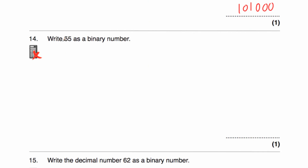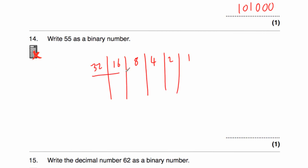Let's have a look at question 14. Question 14 says, write 55 as a binary number. Let's write our columns: 1, 2, 4, 8, 16, 32. We don't want to go up to 64 because that would be too big. For 55: that would be a 32. Adding 16 gives 48. Adding 8 would be 56 — too big, so 0. Then 48 plus 4 is 52, plus 2 is 54, plus 1 is 55. So 55 as a binary number is 110111.